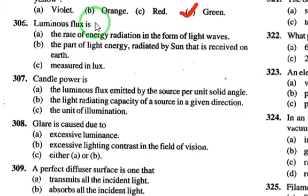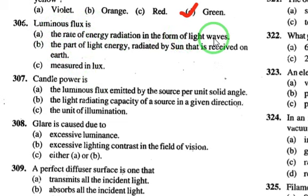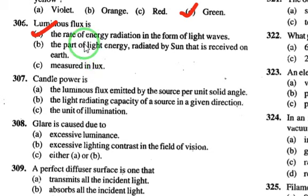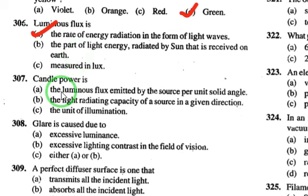Luminous flux is the rate of energy radiated in the form of light waves. The part of light energy radiated by the sun that is received on Earth is measured in lux. Since multiple correct options are given, the answer should be 'all of the above.'